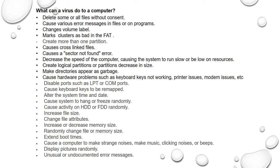Changing file attributes means, for example, if a file's attribute is read-only or archive, the attribute automatically changes. A virus also increases or decreases memory size, randomly changes file or memory size, extends boot times, causes the computer to make strange noises — music, clicking noises, or beeps — displays pictures randomly, and shows unusual or undocumented error messages. Be careful about all these symptoms, because if your system is affected with a virus, these types of symptoms will appear.